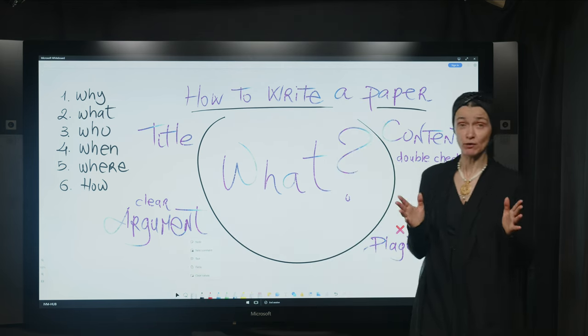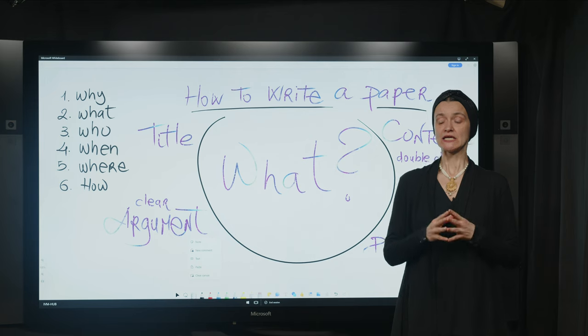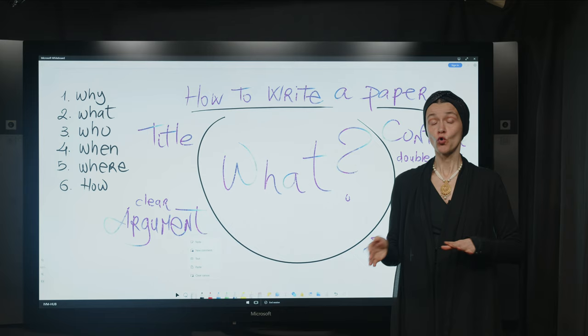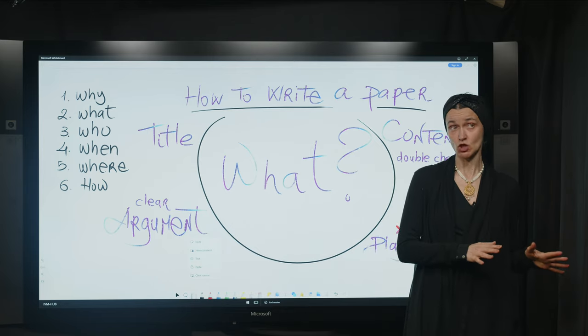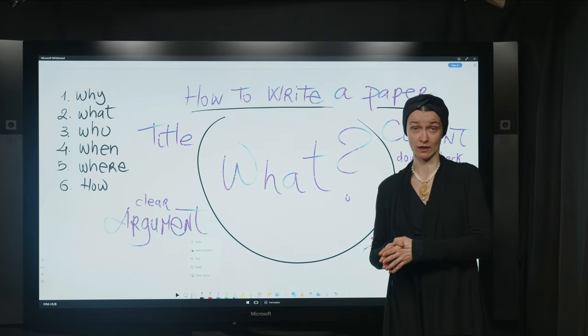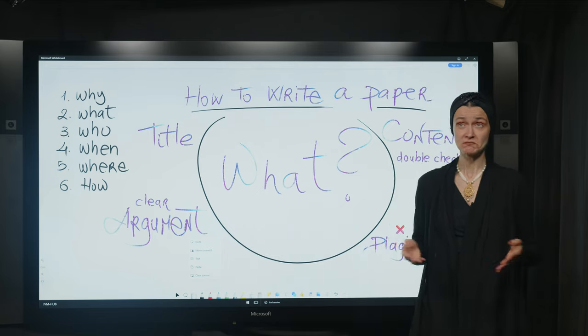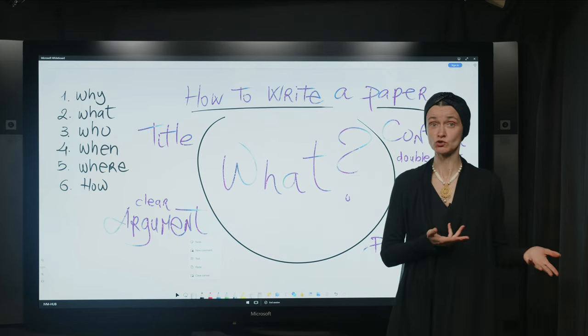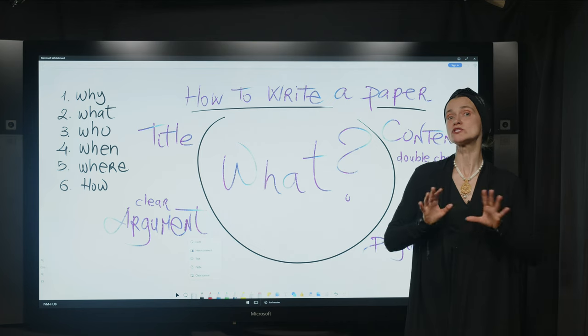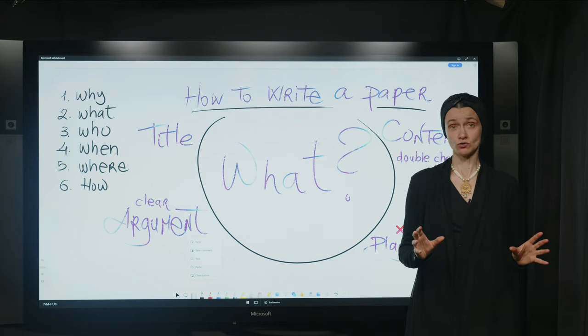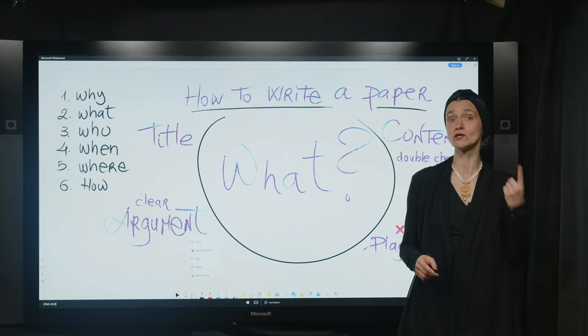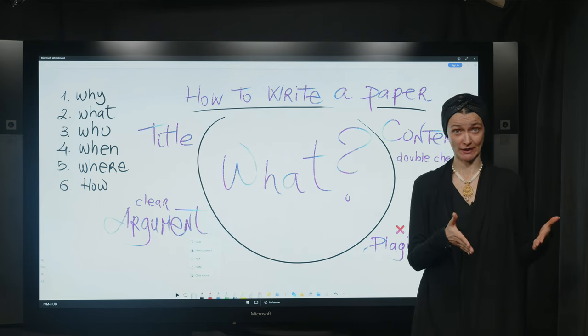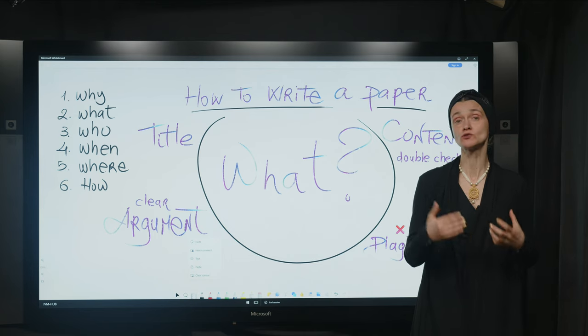There is a very simple exercise to do this. If you try to explain to someone who is not in your class, who is not studying what you're studying, who is not doing what you're doing, can be a family member, can be a friend, can be someone you are chatting with in the subway and saying what you're doing, someone who is not in your field. And you should be able to tell them within one minute, one minute, what is that you're writing about? What is your argument? What is that you are trying to show?